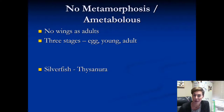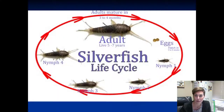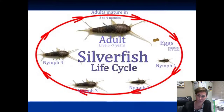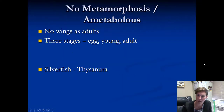No metamorphosis — another term for that is ametabolous. 'A' means none, so no metamorphosis. These are really only going to be silverfish, in the order Thysanura. What separates them from things that have an incomplete metamorphosis is that they don't have wings as adults. There are only three stages: the egg, the young, and then the adult. With silverfish, the life cycle really just changes shape — they all just look like tinier versions of one another. No metamorphosis, or ametabolous, is only silverfish.